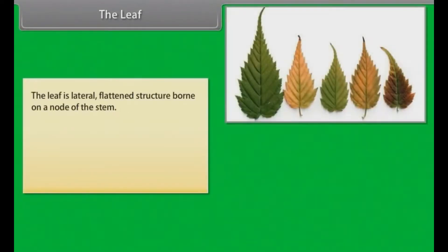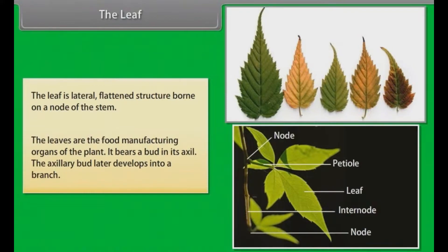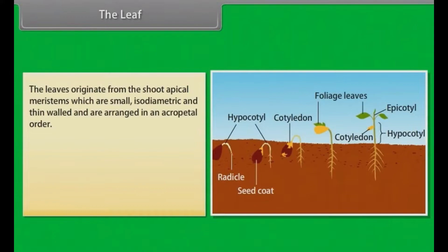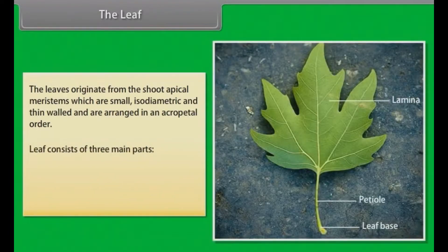The leaf is a lateral, flattened structure borne on a node of the stem. The leaves are the food manufacturing organs of the plant. It bears a bud in its axil. The axillary bud later develops into a branch. The leaves originate from the shoot apical meristems, which are small, isodiametric and thin-walled, and are arranged in an acropetal order.